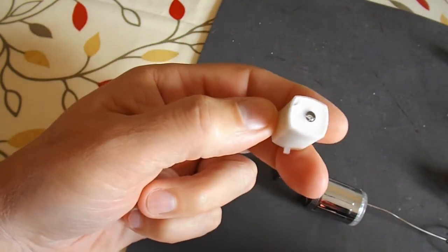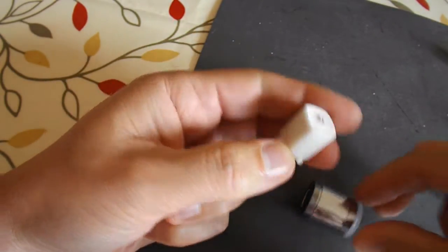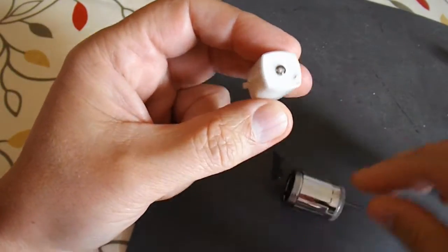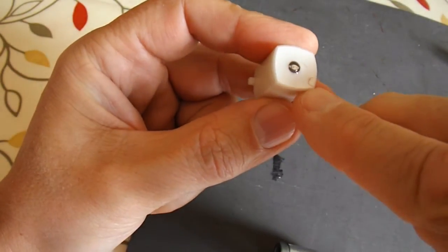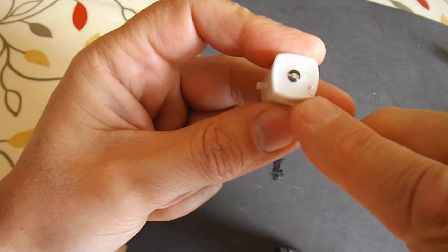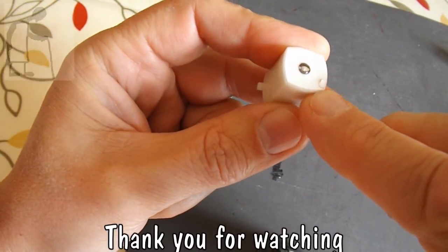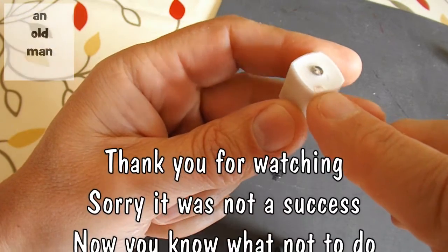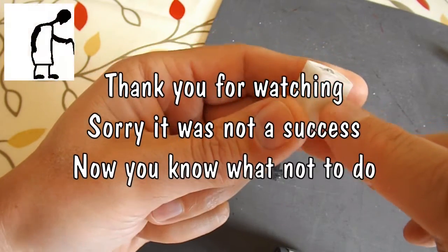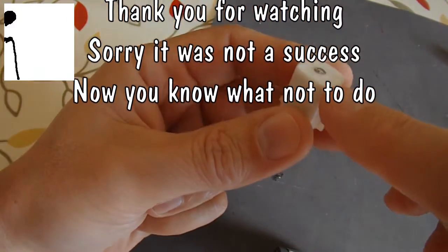But we've still got the problems you'll find later. Which is, the wires are actually sealed into the resin here. So unless we can find some way of dissolving the resin, it's not going to be easy to get this apart and keep it working, because those wires are going to break.